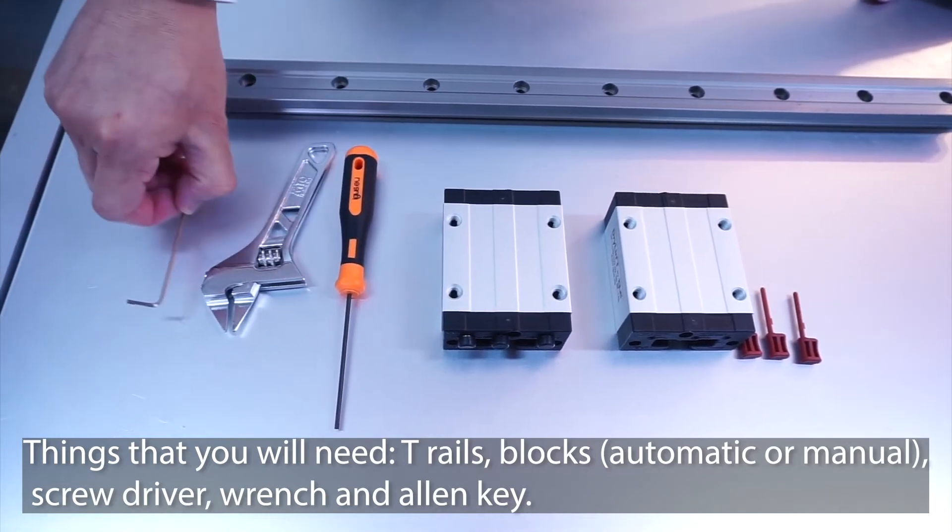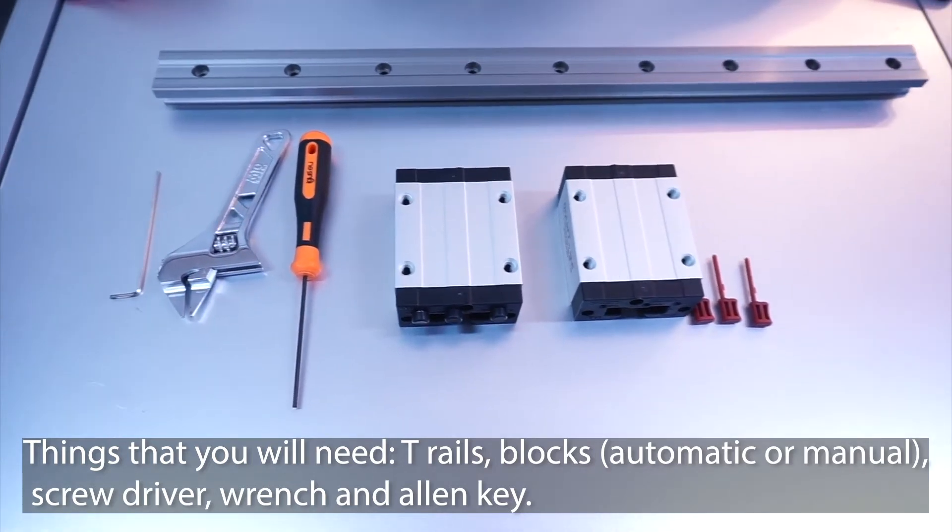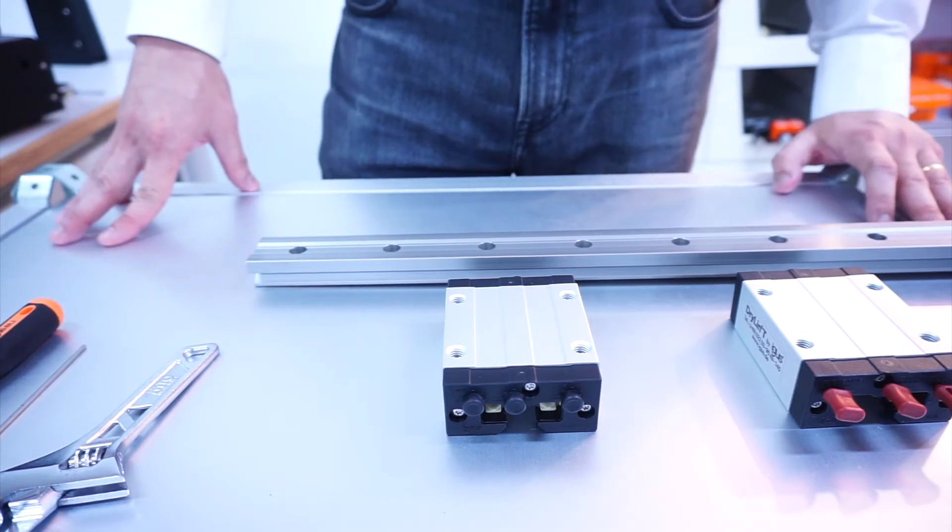and an Allen key. So, let's begin. And now, to install our manual adjustments DryLint T.